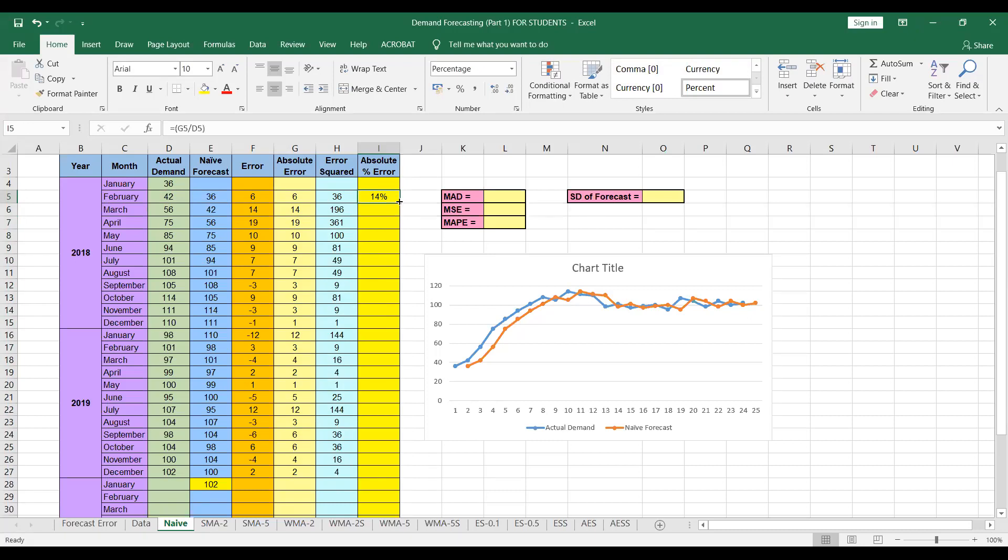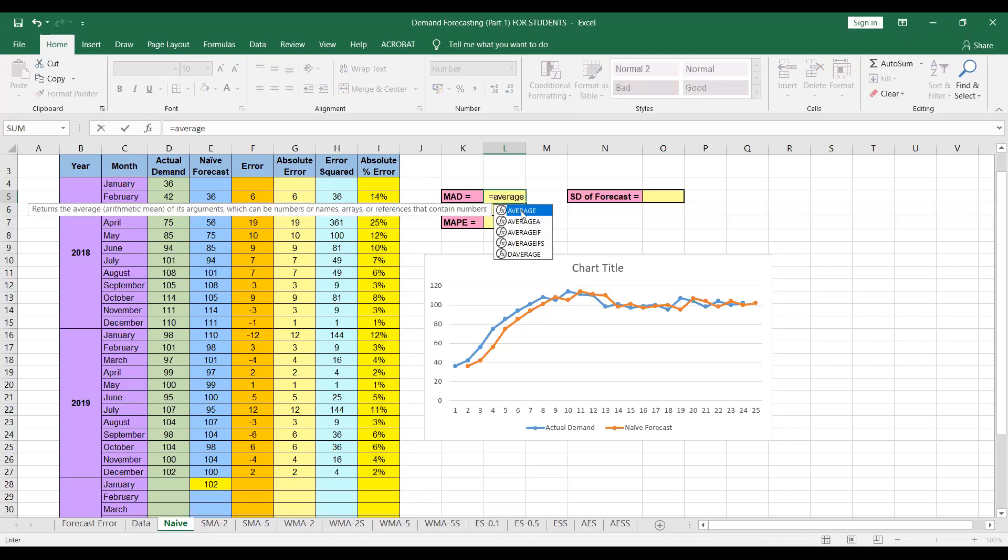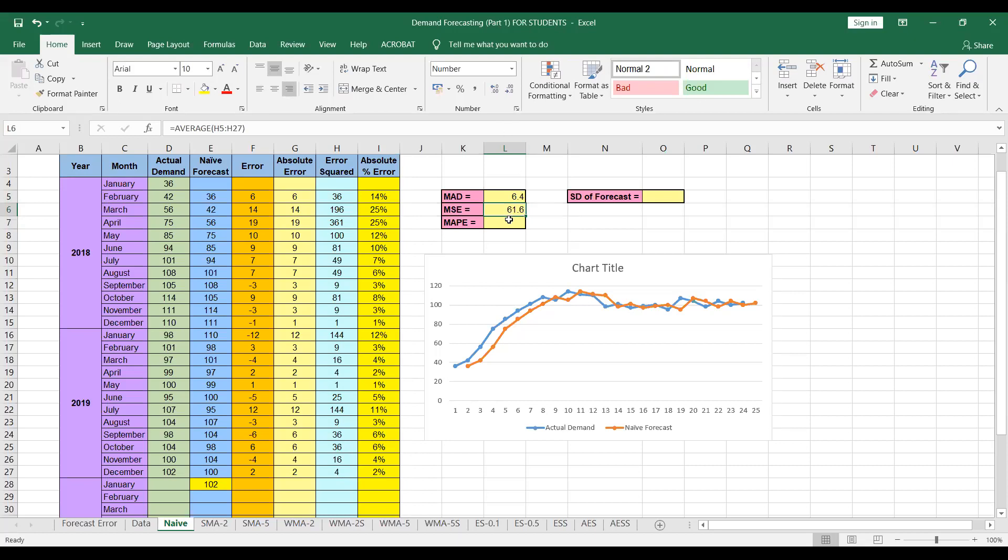I have already made this cell to be a percentage cell. But if you haven't, you can change it from above. So mean absolute deviation will be the average of absolute errors from February 2018 till December 19. That turns out to be 6.4. Mean squared error will be average of these errors squared. That turns out to be 61.6. And mean absolute percent error will be average of absolute percent errors. So that turns out to be 7.5 percent.